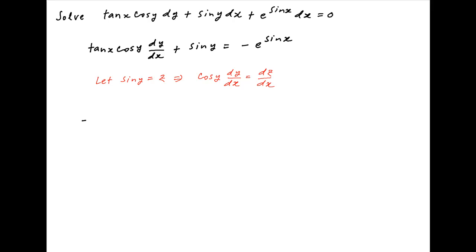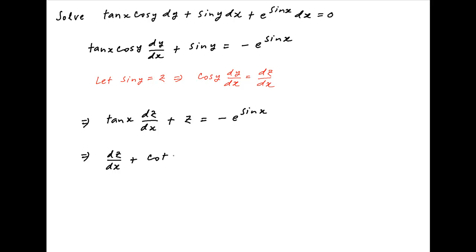Using this result, the differential equation can be written as tan x times dz upon dx plus z is equal to minus of e raised to the power sin x. Dividing both sides by tan x, we get dz upon dx plus cot x times z is equal to minus of cot x times e raised to the power sin x.